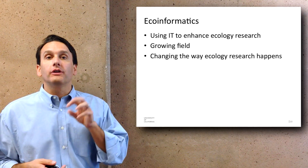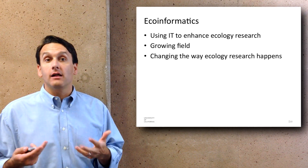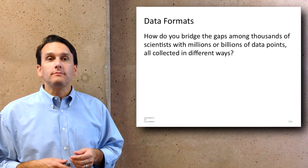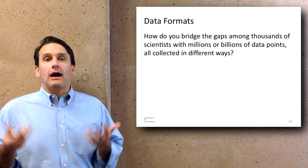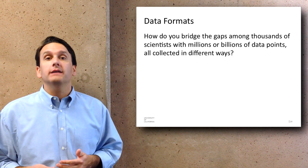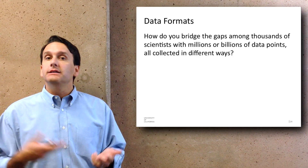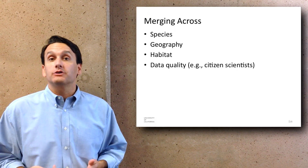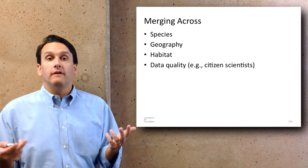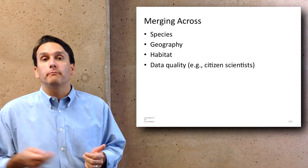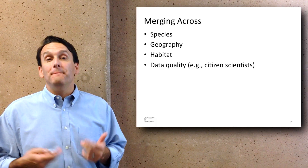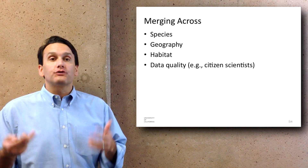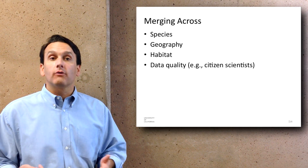Ecoinformatics is the field that looks at how information technology can be brought to bear on ecology as a science — using IT to enhance ecological research and change the way it can happen. But there's a challenge: how do you bridge gaps among thousands of different scientists with millions or billions of data points, all collected in different ways using different techniques? How do you merge across different species, geographies, habitats, and data quality? For example, citizen scientists — regular citizens enlisted to count birds out their back window — may provide less reliable data than a paid researcher, and yet they allow for a much broader set of activities when you can enlist thousands of citizens rather than just a few researchers.